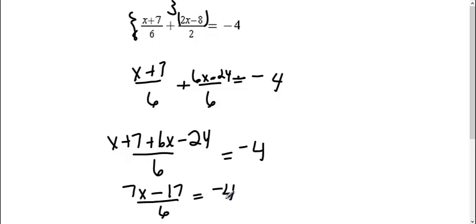All right, so now that I combined it to make one fraction, I need to get to this x. So to get to that x, I need to get rid of the 6. Right now it's divided by 6, so we always do the opposite. So I'm going to multiply both sides by 6.